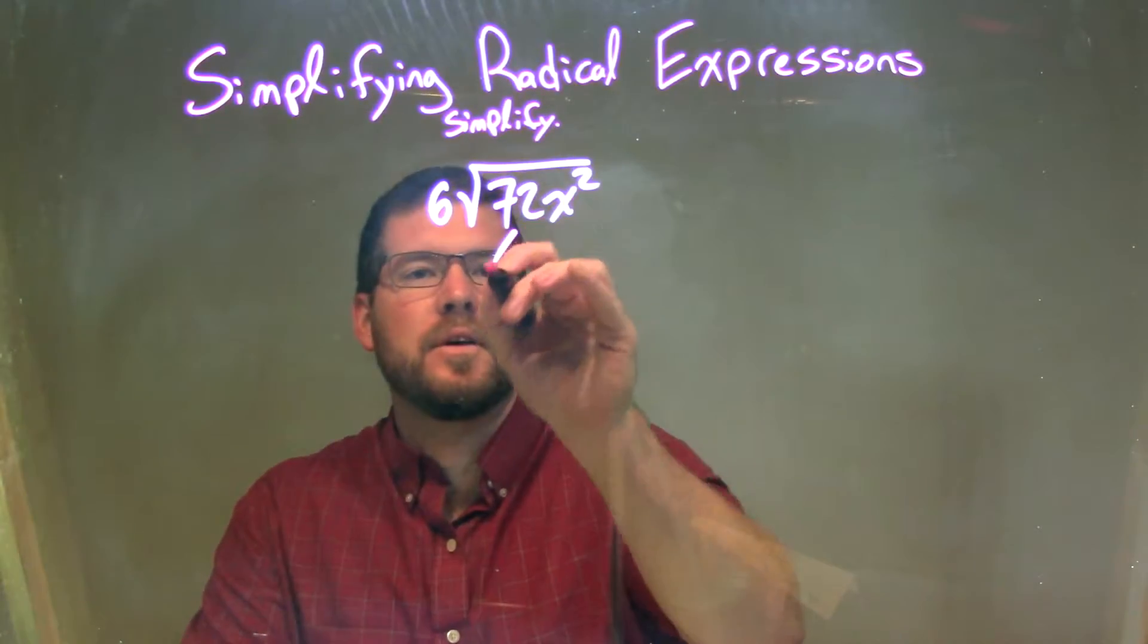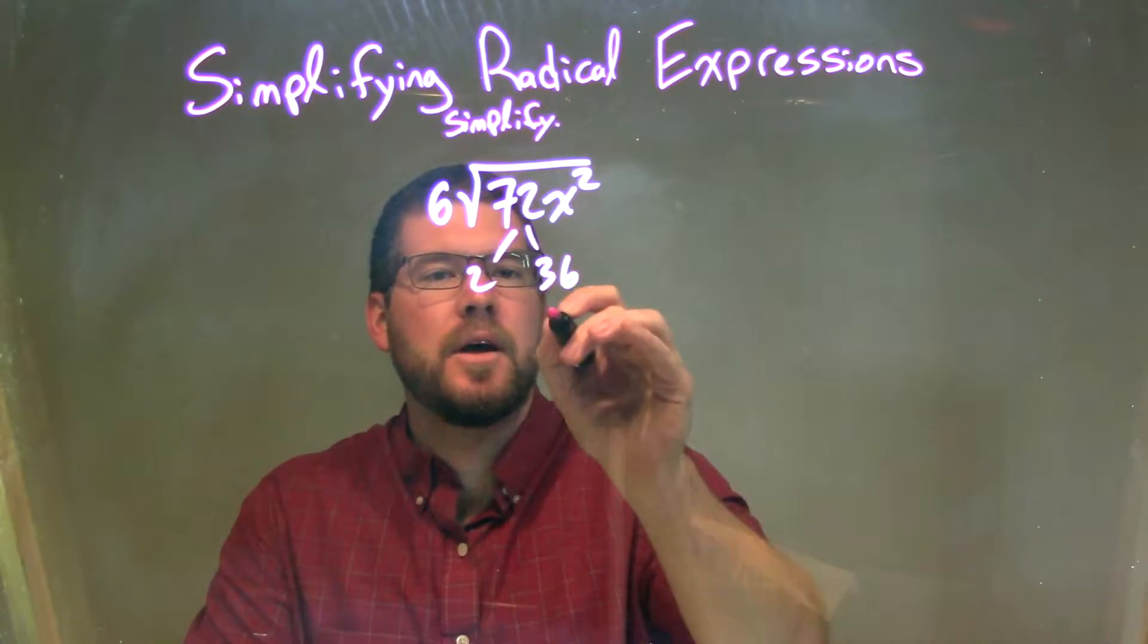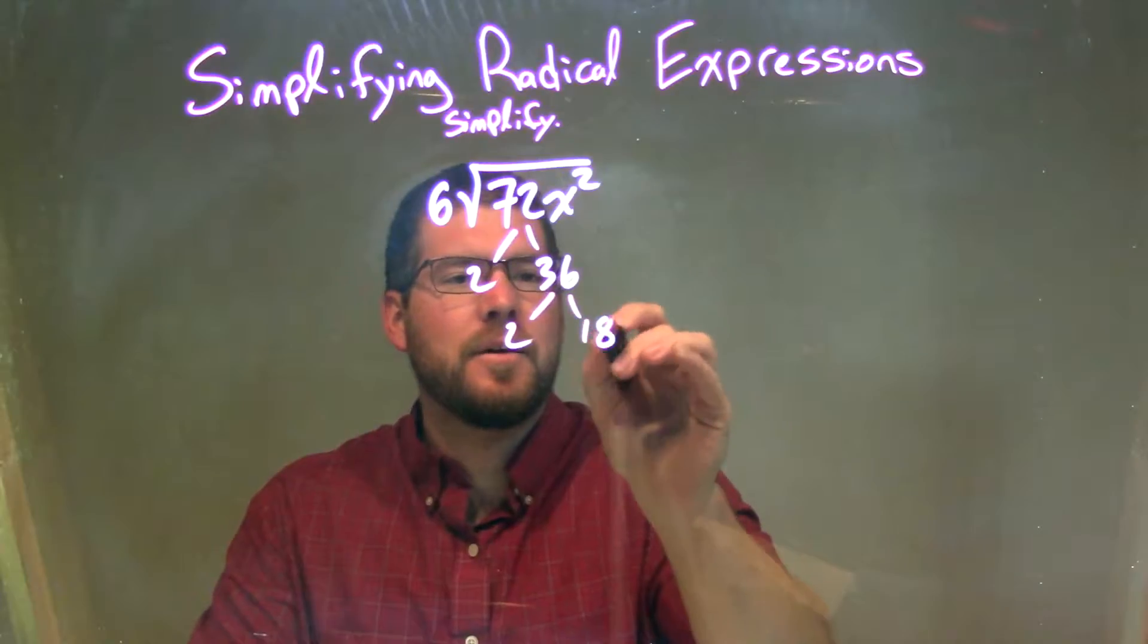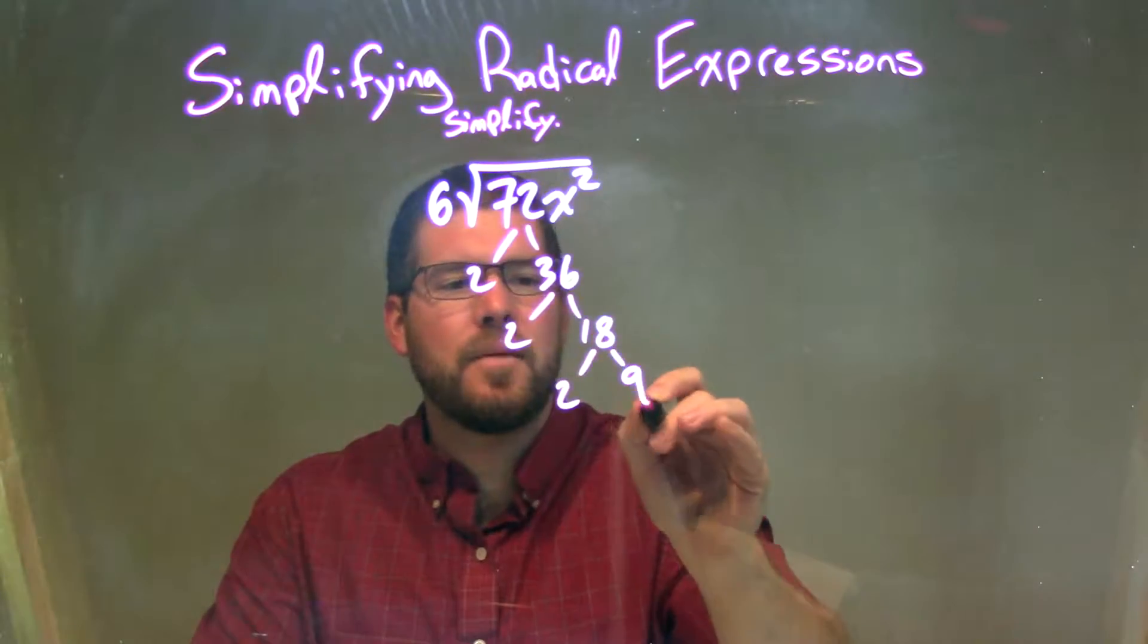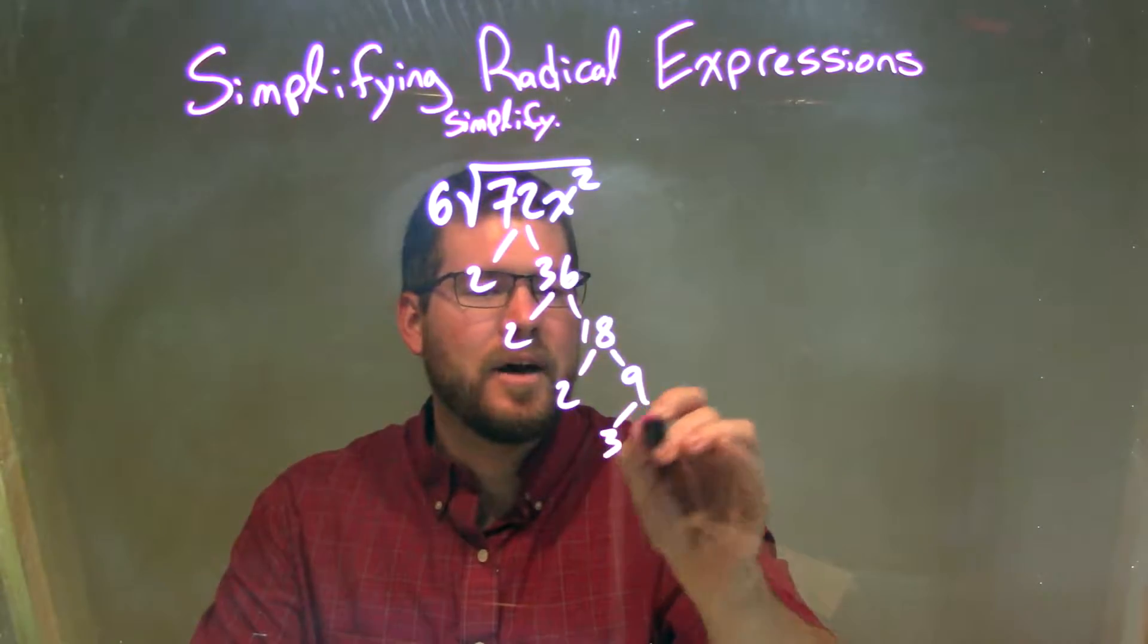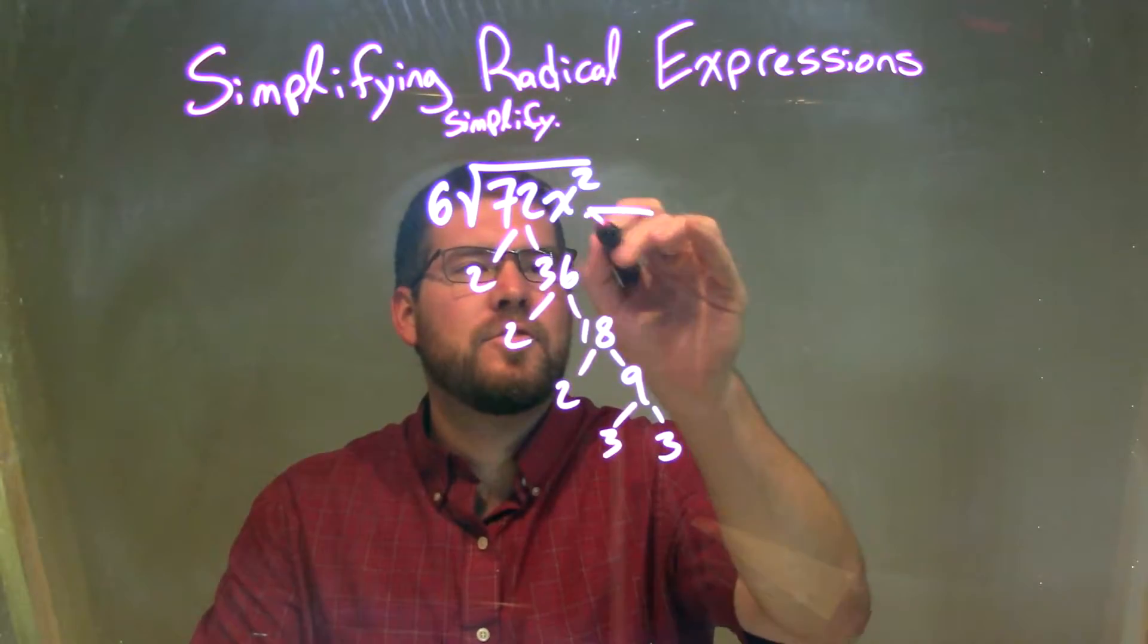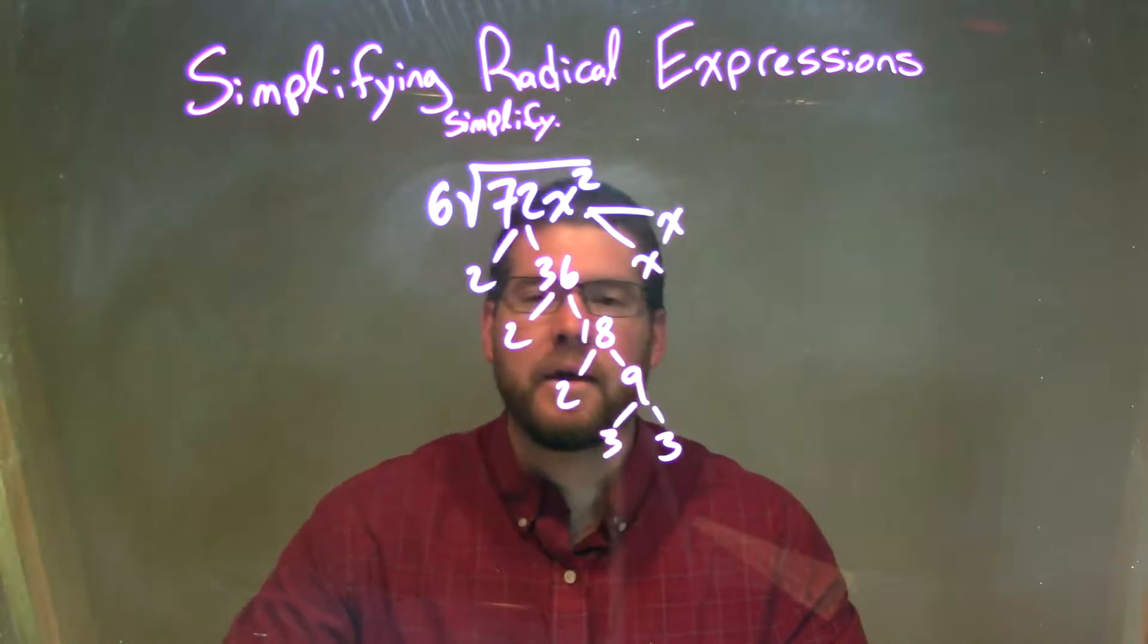72 prime factorization is 2 times 36, and 36 is 2 times 18. 18 is 2 times 9, and 9 is 3 times 3. x squared is just x times x.